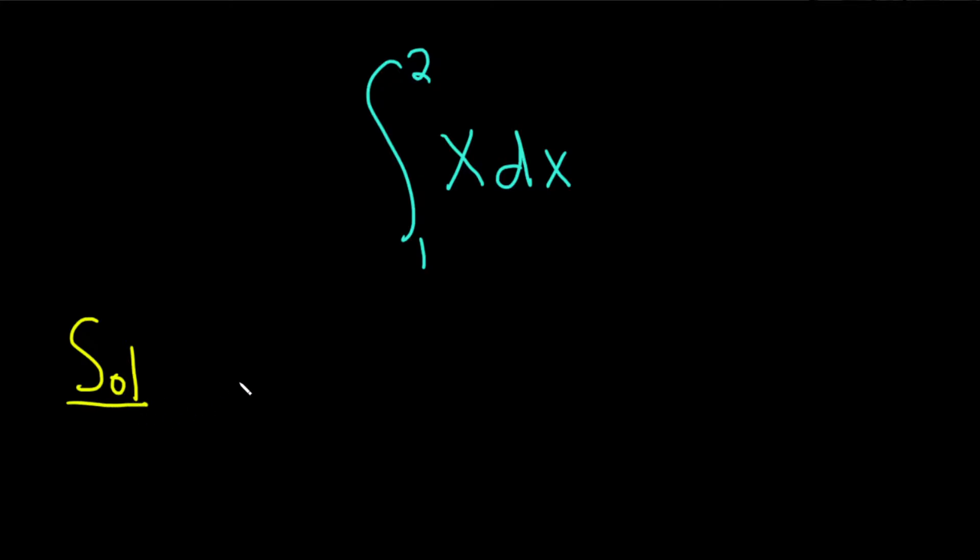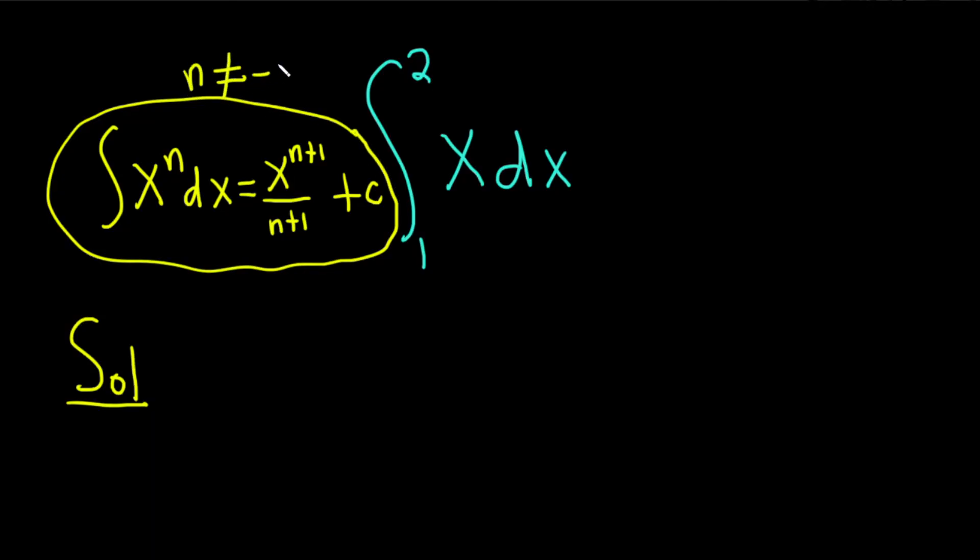To do this problem we're going to use something called the power rule from calculus. The power rule says if you have x to the n and you want to integrate this with respect to x, as long as n is not equal to negative 1, this is equal to x to the n plus 1 divided by n plus 1, and then you add your constant of integration capital C. This is a very powerful formula and it will work as long as n is not equal to negative 1.